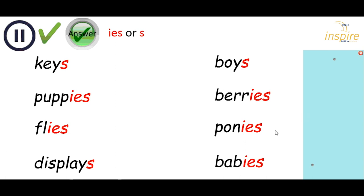Boys — there's a vowel before the Y, just add S. Berries — Y to an I, add ES. Ponies — Y to an I, add ES. And babies — Y to an I, add ES. How did you do? If you need to go back and check that again, you can just rewind.